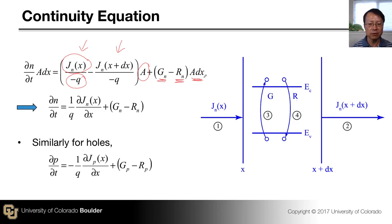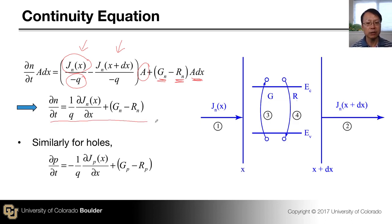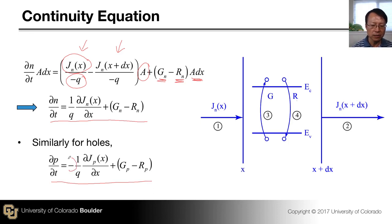After canceling the cross-sectional area, you arrive at a clean differential equation — the continuity equation for electrons. You can go through the same process for holes; the only difference is the sign, because holes carry the opposite charge from electrons.